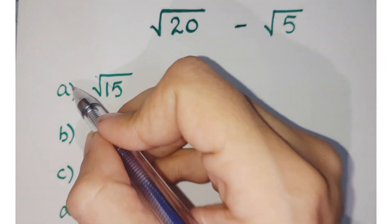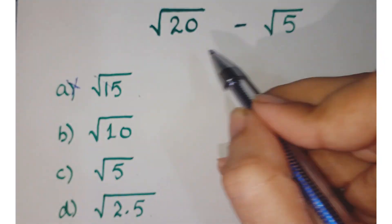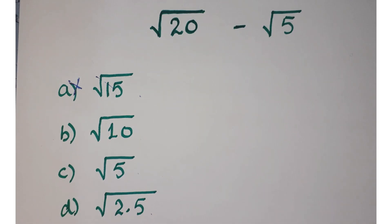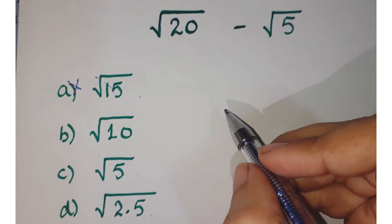Now this first option is discarded because it's not possible that by subtracting the square roots you get this answer, right? Now let's work on this.